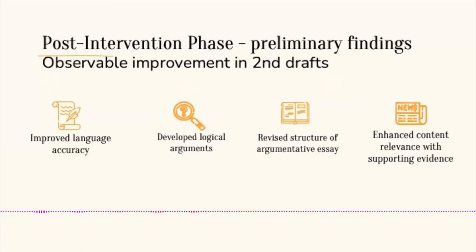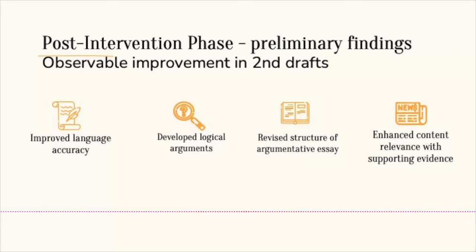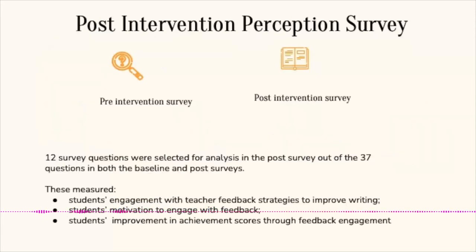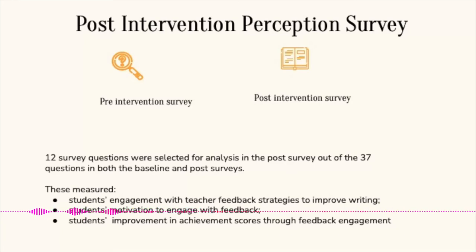After we looked at draft two, the observable improvements were that students improved in their language accuracy, logical arguments were present, appeal development was clearer, and content was more relevant. We applied the survey after they did their first draft and received feedback, and again after the second draft and feedback.